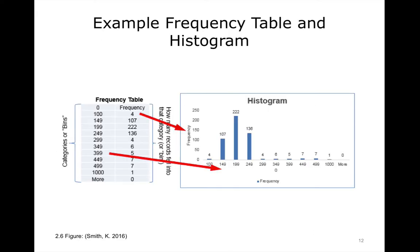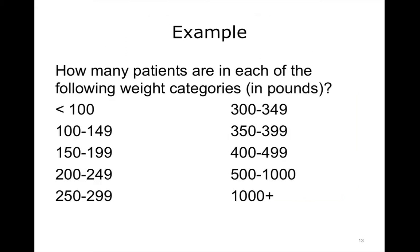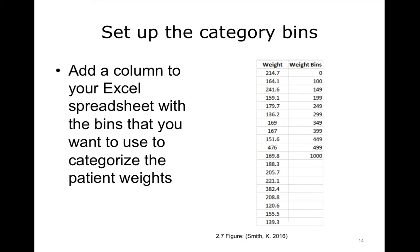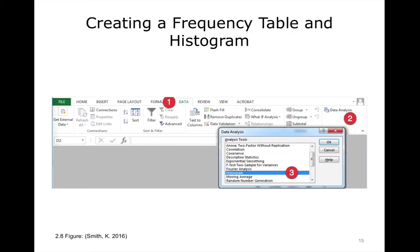On the left is a frequency table, and on the right is a histogram of the same data. The categories or bins from the frequency table are the numbers along the horizontal x-axis of the graph, and the frequencies or counts are the numbers along the vertical y-axis. To create that table and histogram, we want to know how many patients fall into each category and see this as a graph. We'll take our 500 patient weights and set up categories in roughly 50-pound divisions. Add a column to your Excel spreadsheet with the bins you want to use to categorize the patient weights.